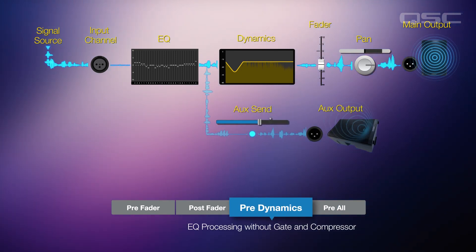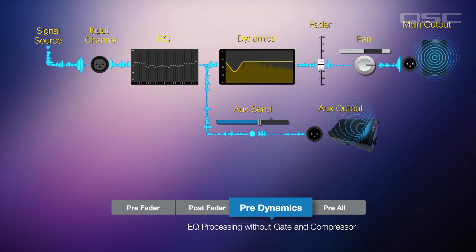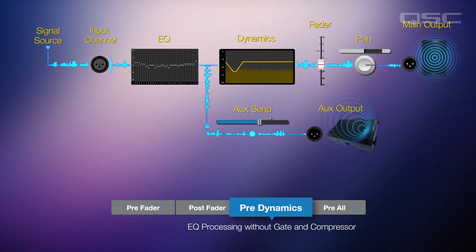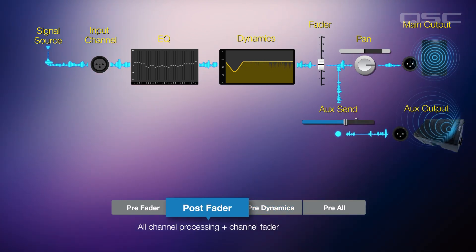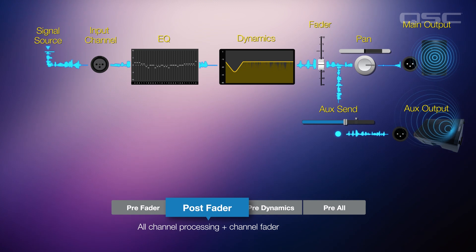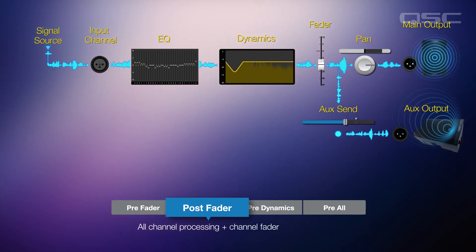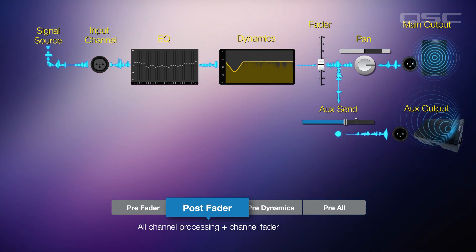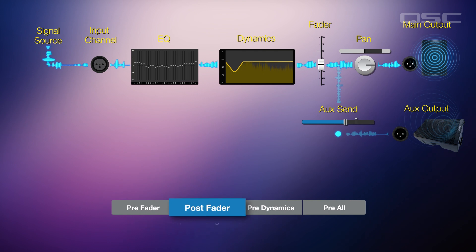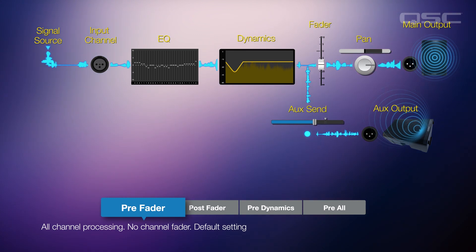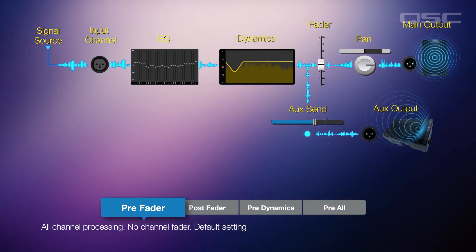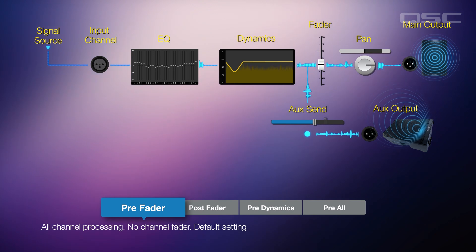Pre-dynamics means the signal has been processed by the channel EQ, but not by the gate and compressor. Post-fader means that the signal going to the aux has passed through all the channel processing and the channel fader — when the channel fader is raised or lowered, the signal going to the aux will change as well. Pre-fader means that the signal has passed through all the channel processing but won't be affected by the channel fader. This is the default setting in TouchMix and is most commonly used for monitors.